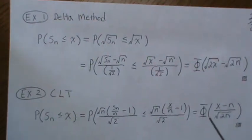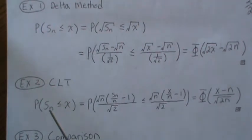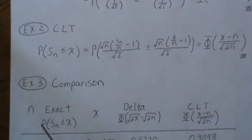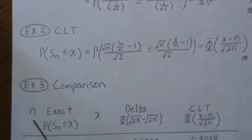And the exact method: we know that's a chi-squared with n degrees of freedom, so we can just look it up in the table. Let's compare the three methods.